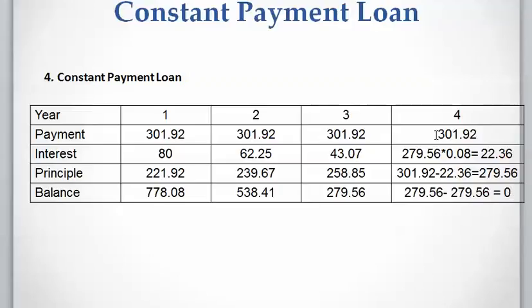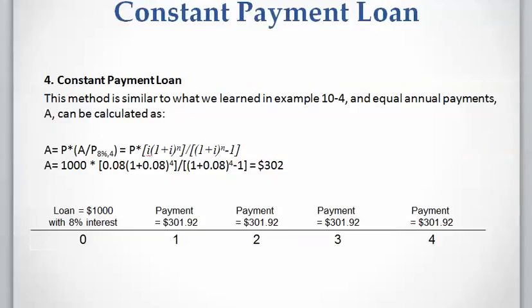To summarize: a loan of $1,000 is taken at 8% at the present time, and equal payments of approximately $302 are paid each year from Year 1 to Year 4 to fully repay the loan.